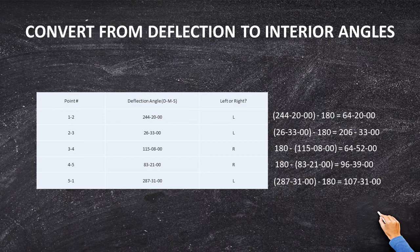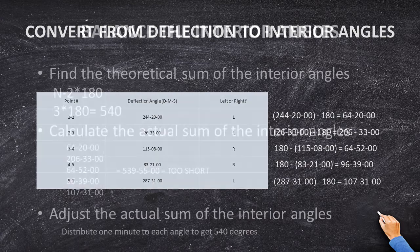Last but not least, this is a left angle: 287°31'00" minus 180° equals 107°31'00". So we have five interior angles: 64°20'00", 206°33'00", 64°52'00", 96°39'00", and 107°31'00". Adding those up gives us our actual sum.